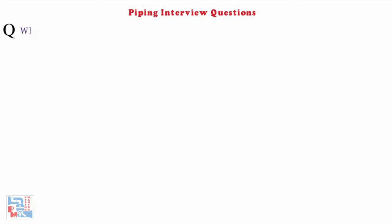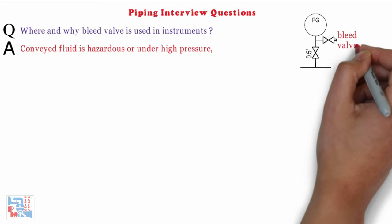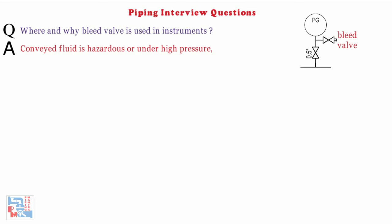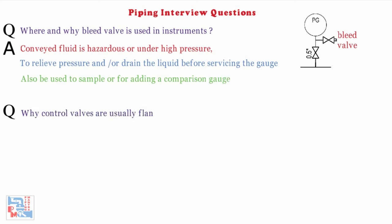Next: where and why is a bleed valve used? If the conveyed fluid is hazardous or under high pressure, a branch fitted with a bleed valve is inserted between the gauge and its isolating valve to relieve the pressure and/or drain the liquid before servicing. It can also be used to sample or for adding a comparison gauge.